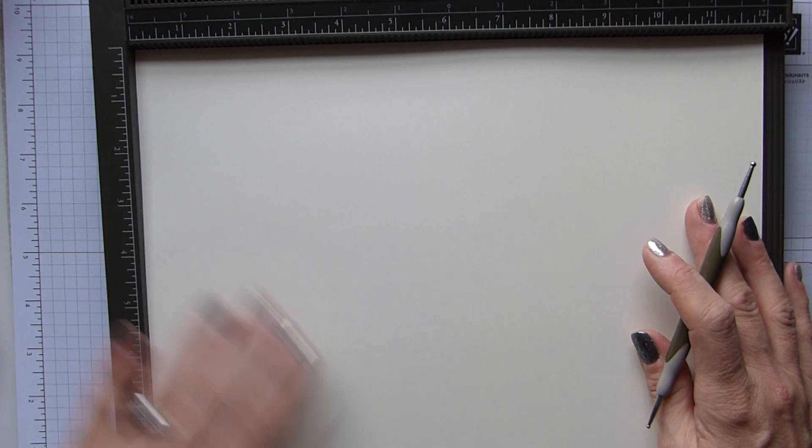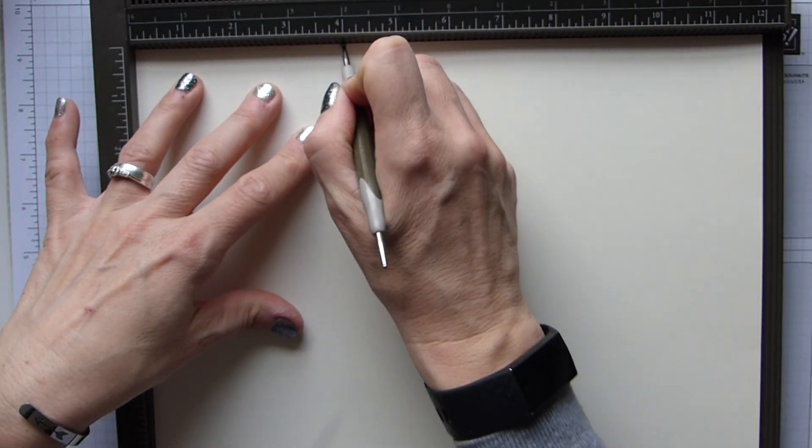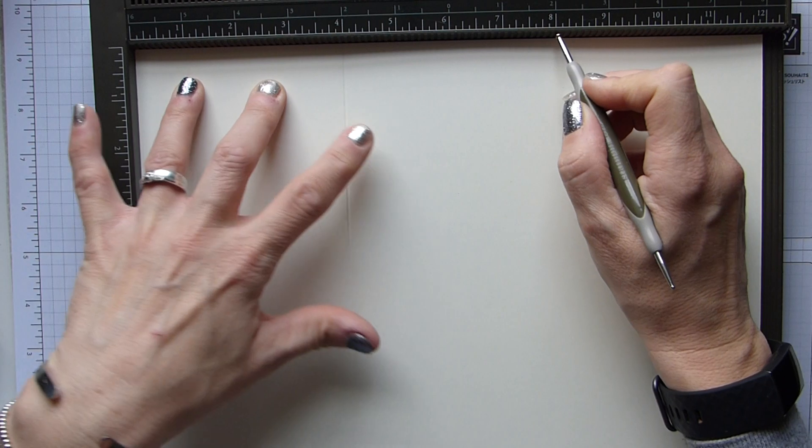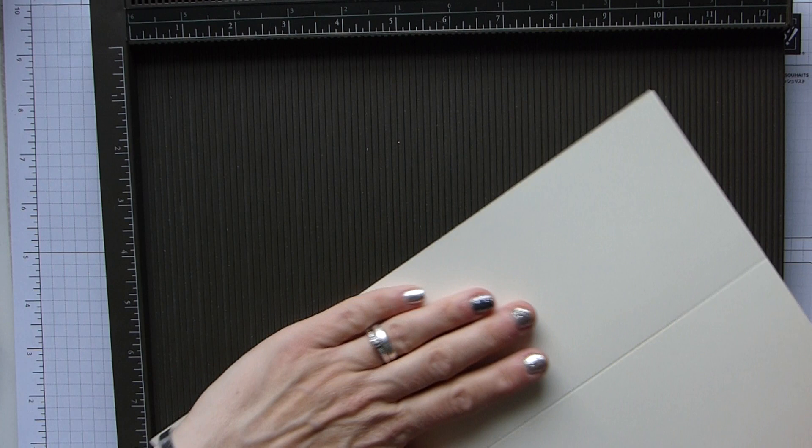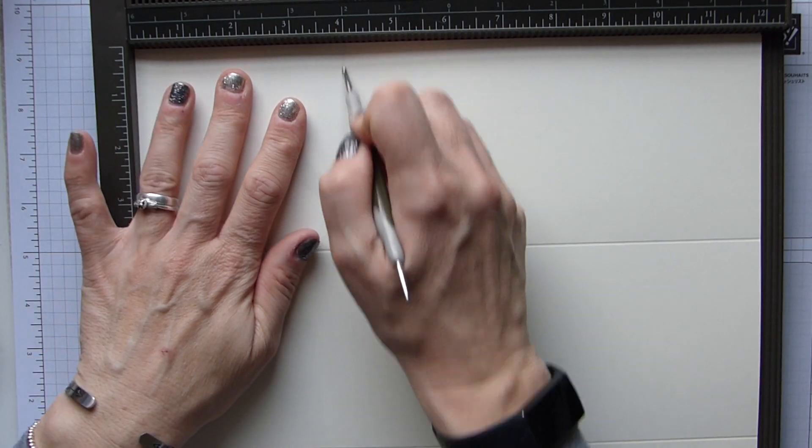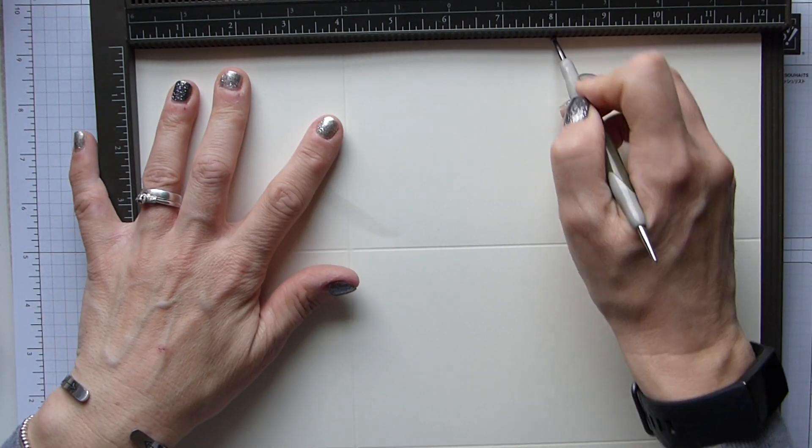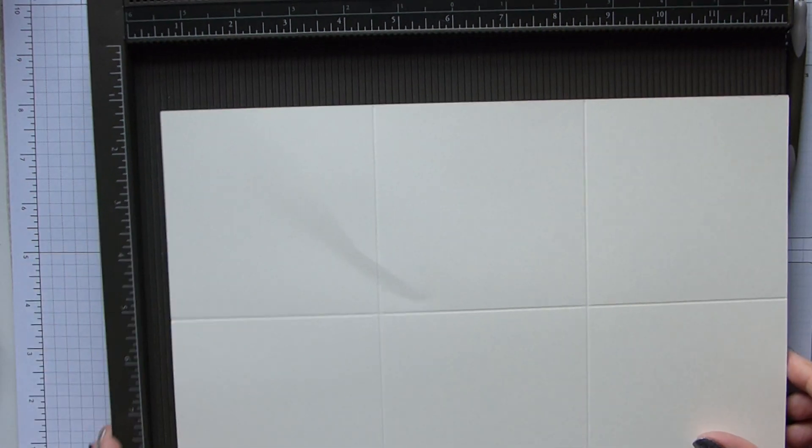I'm starting off with 12 by 12, and it's actually 30 by 30 centimeters. If you do have the 30.5 it makes it a little bit easier if you just trim a fraction off. So we're going with 12 by 12, we're going to score at 4 inches and 8 inches, which is 10 and 20 centimeters. We're going to rotate and score the same again, so 4 and 8 inches.